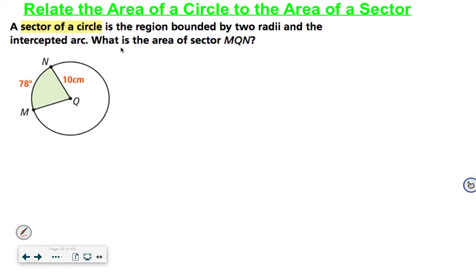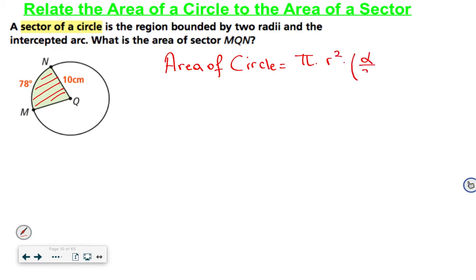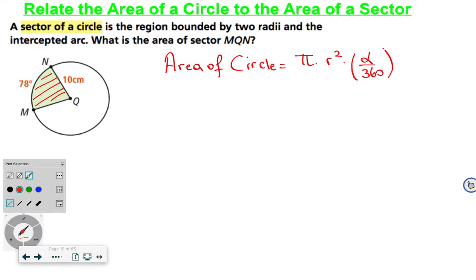In this part, we relate the area of a circle to the area of a sector. A sector of a circle is the region bounded by two radii and an intercepted arc. To find the area of a sector, first recall that the area of a whole circle is pi times R squared. The formula becomes pi times R squared times alpha over 360, where alpha is the measure of the arc. For a whole circle, alpha is 360, so 360 over 360 equals 1.